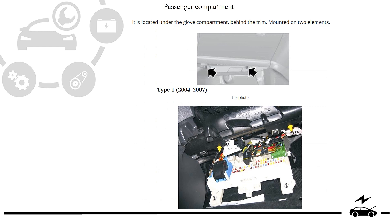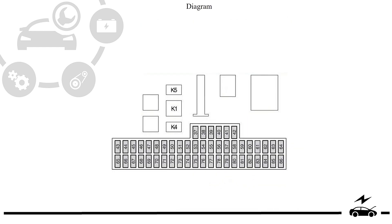Passenger compartment fuse box — location, type 1, photo, diagram.